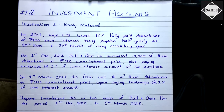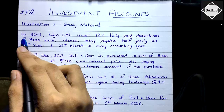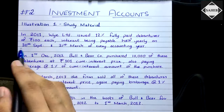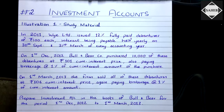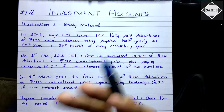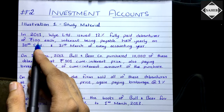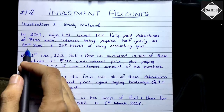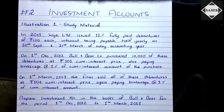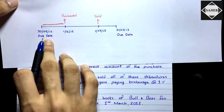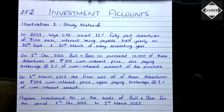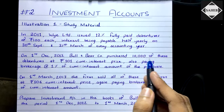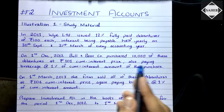Now let's go through the question — Illustration One. In 2011, Y Limited issued 12% fully paid debentures of ₹100 each, with interest payable half-yearly on 30th September and 31st March of every accounting year. These dates — 30th September and 31st March — are called due dates, when the interest is payable on the debentures.